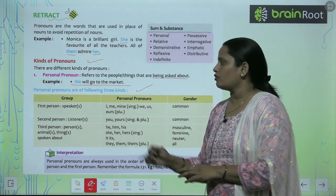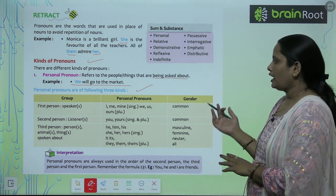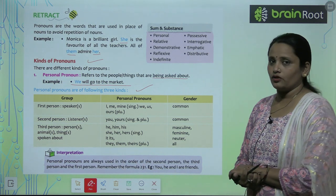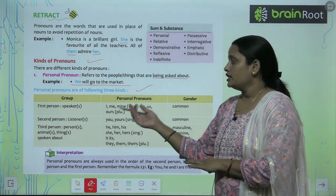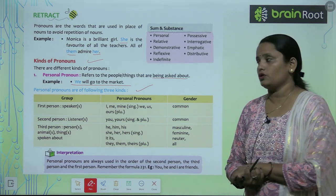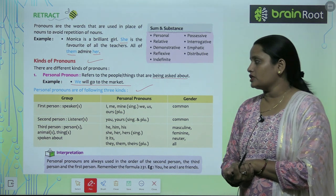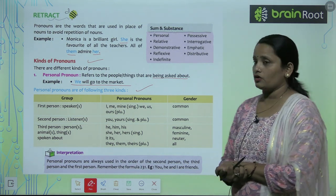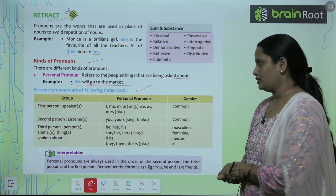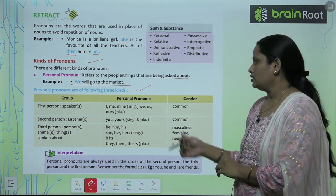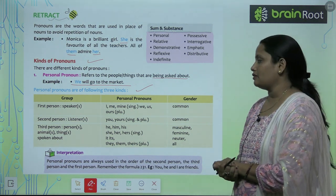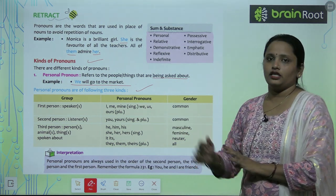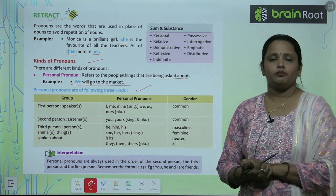Personal pronouns are of three kinds. First person is the speaker. Second person is the listener. Third person is the person, animal, or thing spoken about. For first person, we use: I, me, mine (singular) and we, us, ours (plural) — all common gender. For second person: you and yours — singular and plural both.